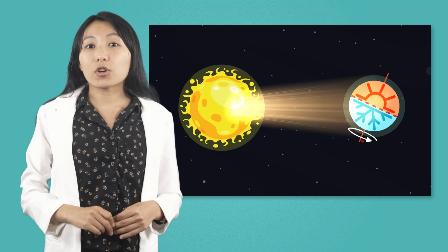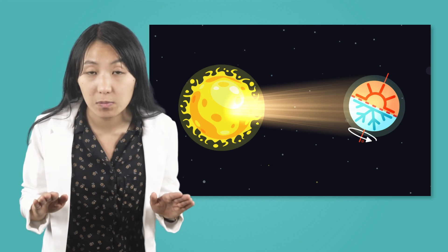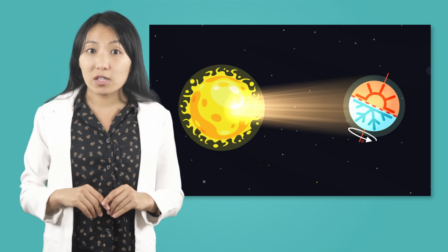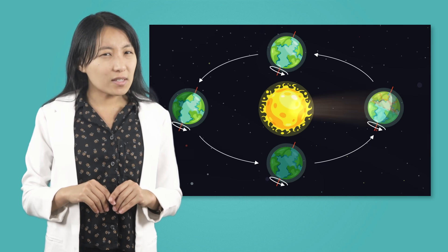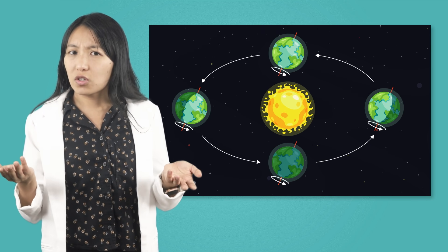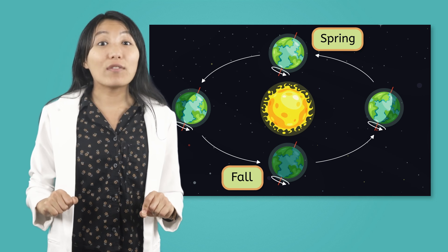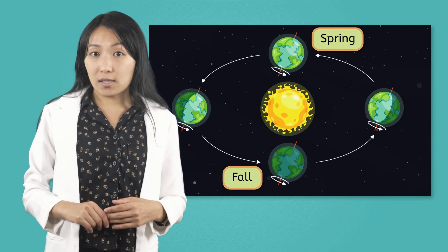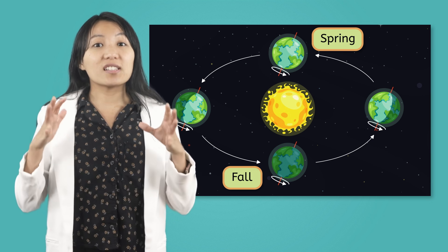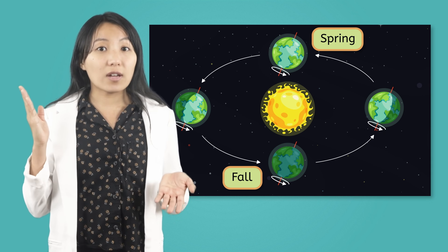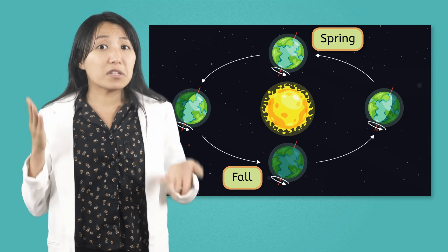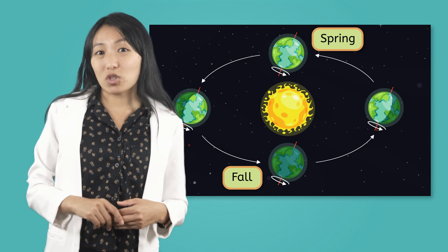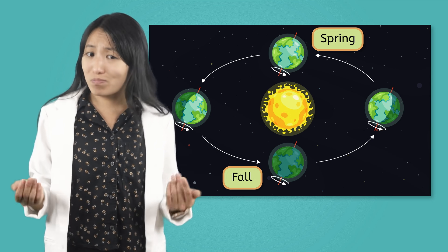Now, we know that areas of Earth tilted toward the Sun experience summer, and areas tilted away from the Sun experience winter. What about the seasons between summer and winter? Spring and Fall have a lot in common. During these two seasons, the Earth is positioned in such a way that both the Northern and Southern Hemispheres receive about the same amount of direct sunlight. The amount of daylight and temperatures in Spring and Fall are actually quite similar.